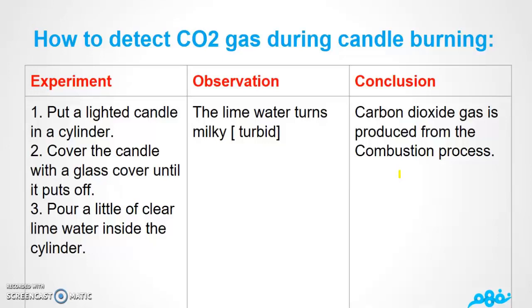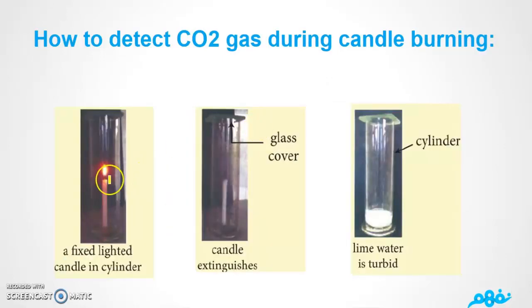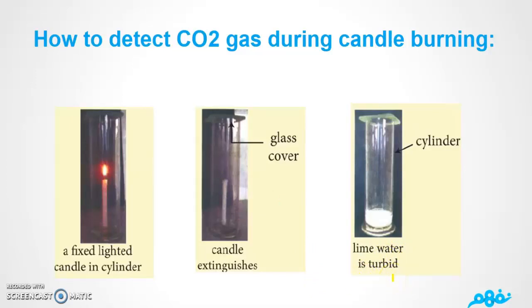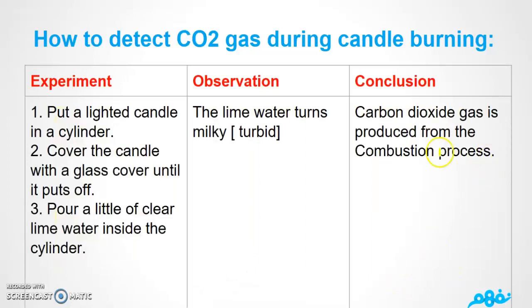To summarize this experiment: if you place a candle inside a cylinder and cover it with a glass cover, after a while the candle extinguishes. When you add lime water, it becomes turbid or milky. This confirms that carbon dioxide gas is produced from the combustion, or burning, process. That concludes the first part — see you in the second part.